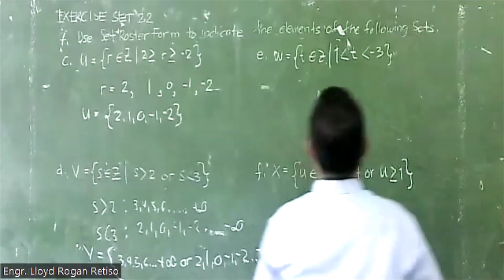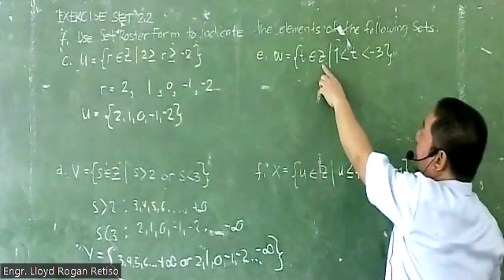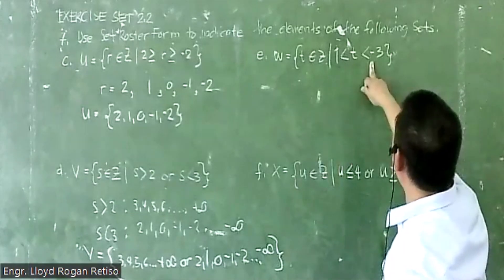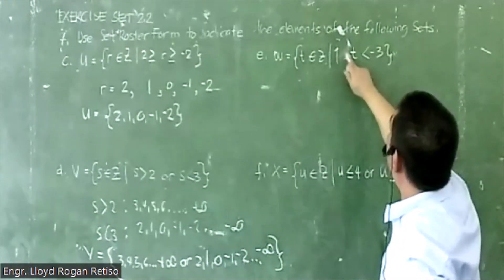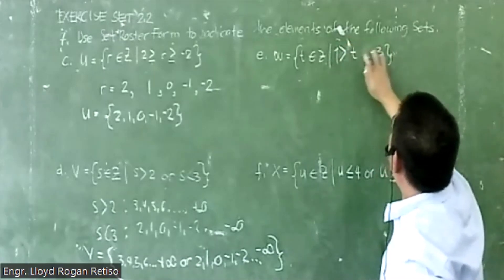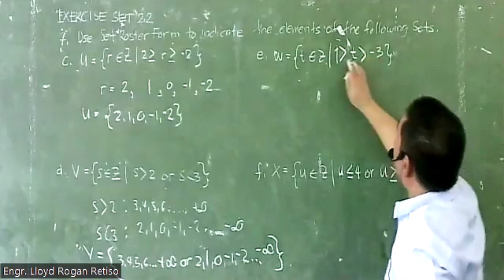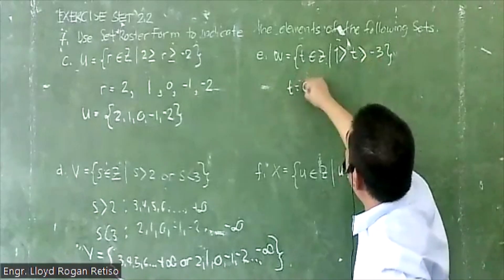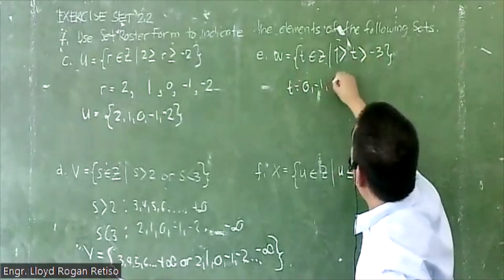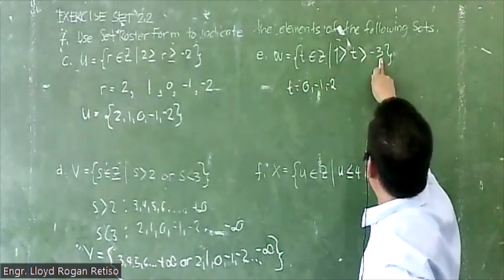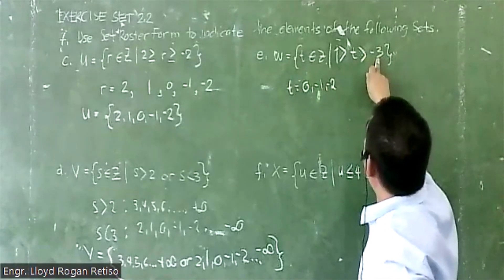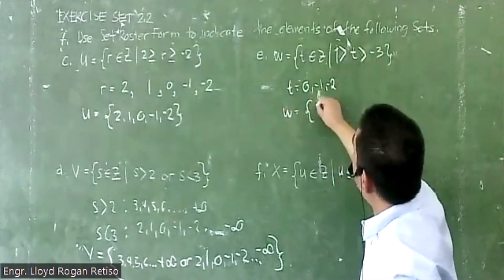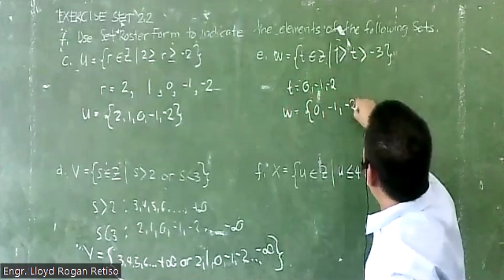Next, T is an integer such that T is less than 1 and T is less than negative 3. T less than 1 gives 0, negative 1, negative 2, and so on. The intersection with T less than negative 3 gives us W equals the set {0, -1, -2}.